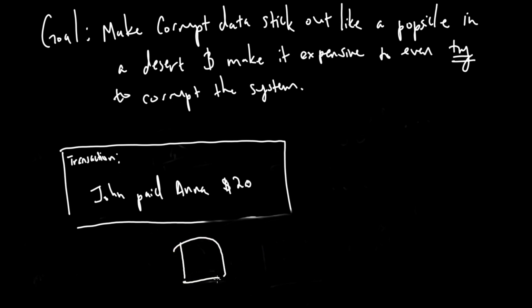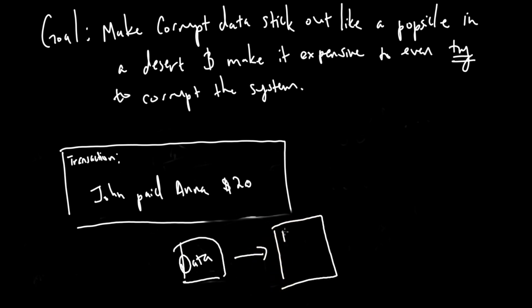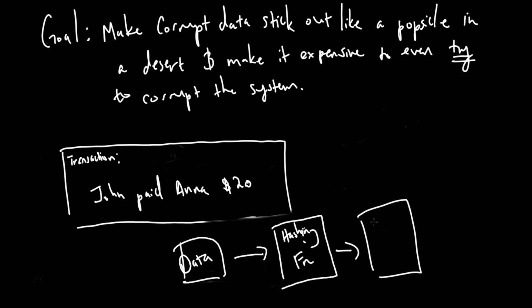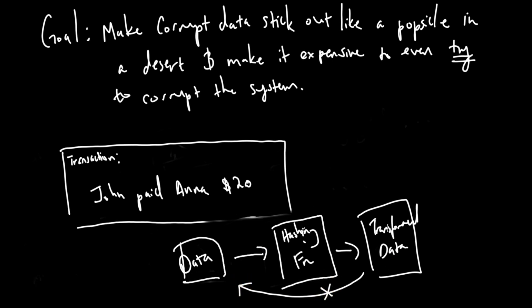In hashing, you have some data — it could be like this transaction, for instance — and you apply a hashing function to it. You can think of the hashing function as a way to scramble the data in some way that cannot be retraced to the original data. This is transformed data and you cannot get from the transformed data back to the original. It looks like a bunch of gibberish; it's hard to reverse engineer how to get back to the original data.